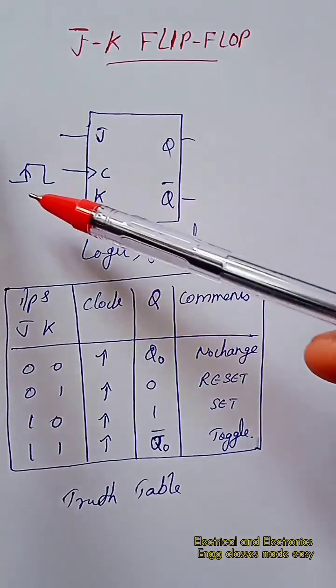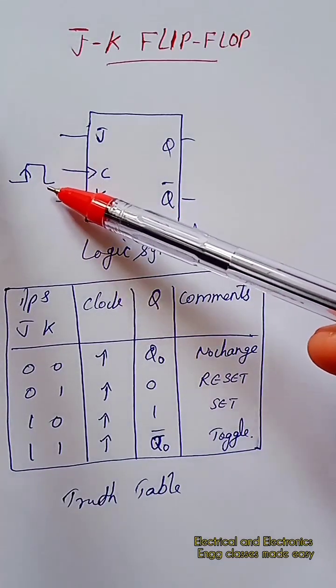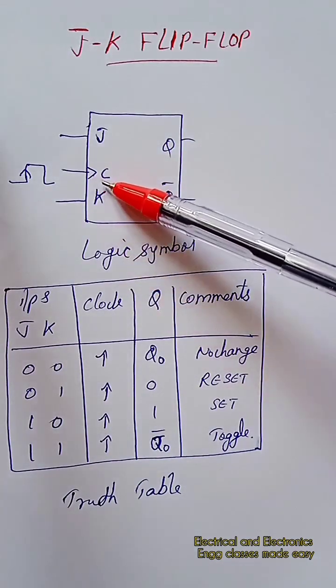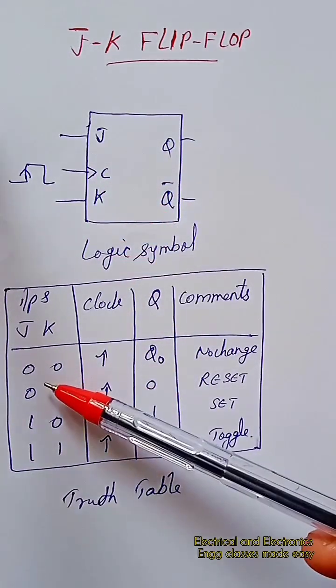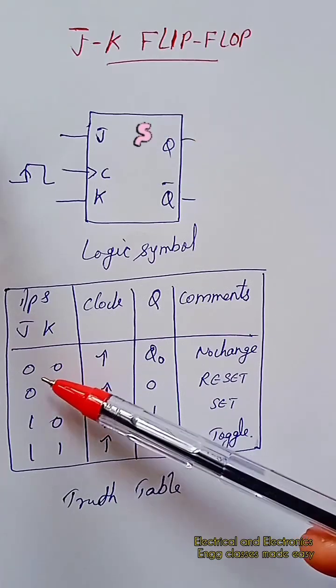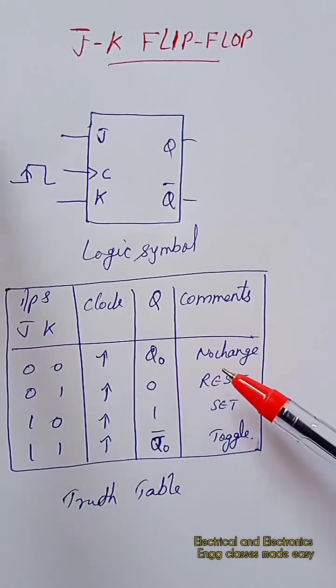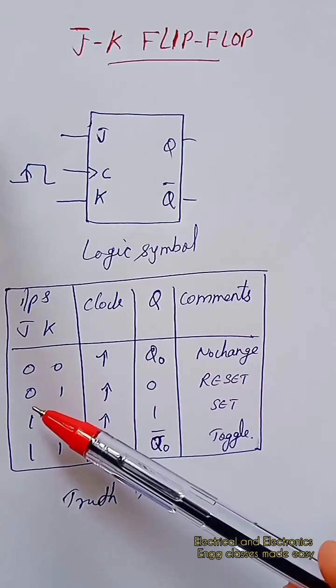This is a positive edge triggered JK flip-flop, and this is the clock signal. When J and K are both zero, the output is Q zero, that is no change to the output. When J is zero and K is one, the output is zero, that is the reset state.